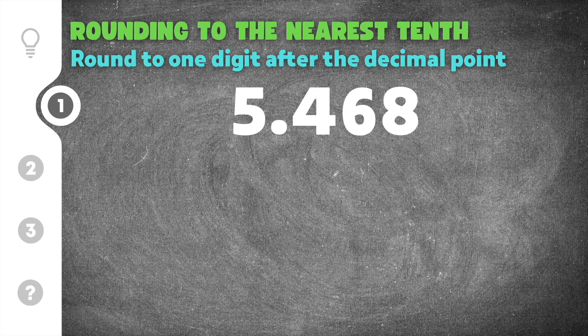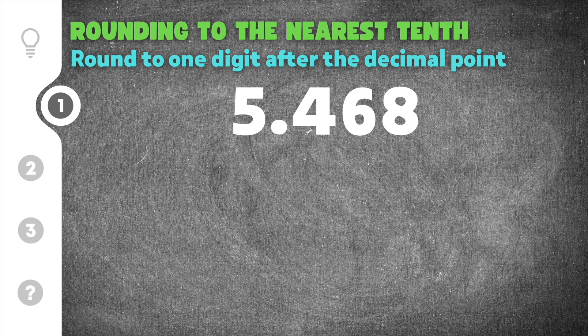So here we are at our first problem. It gives us 5.468. Now we're rounding to the tenths value, which would be the first digit after the decimal point, so I'm going to go ahead and draw a line right here. I know that I'm rounding to this four. This six is going to tell me whether this four stays the same or it rounds up.